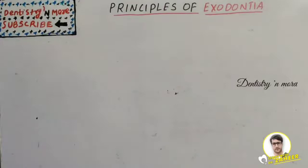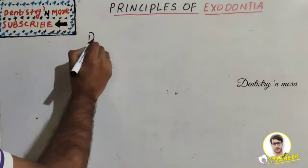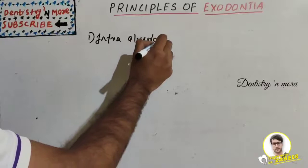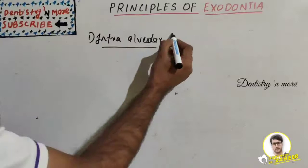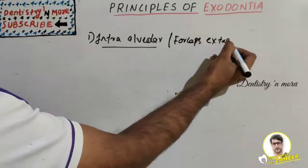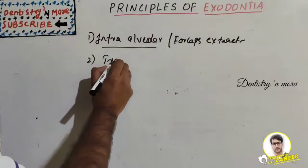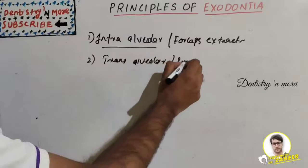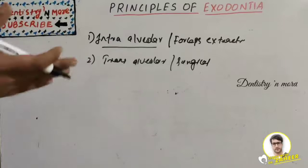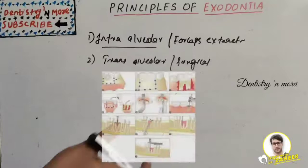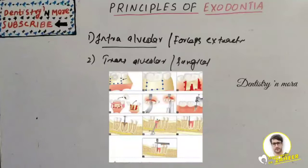We have two types of tooth removal or exodontia. The first one is intra-alveolar type — the most common type, done by forceps, also known as forceps extraction. The second one is trans-alveolar, which is a surgical extraction, where we retract the flap and using a micromotor or rotor, we cut the bone and sometimes split the tooth or take it as a whole.